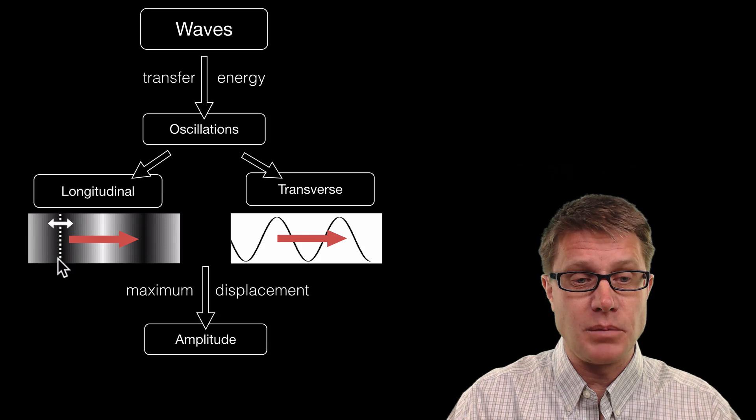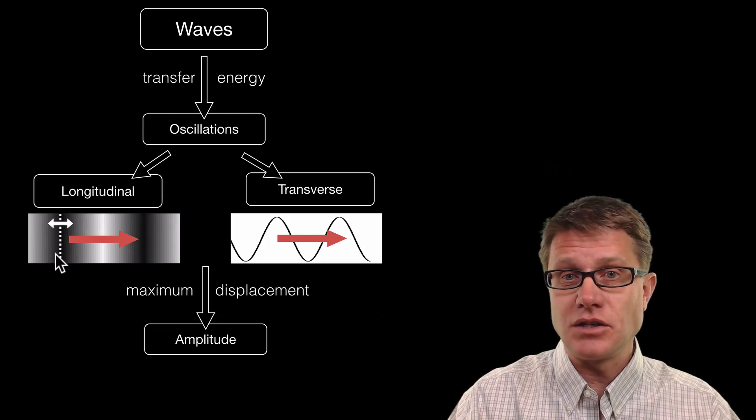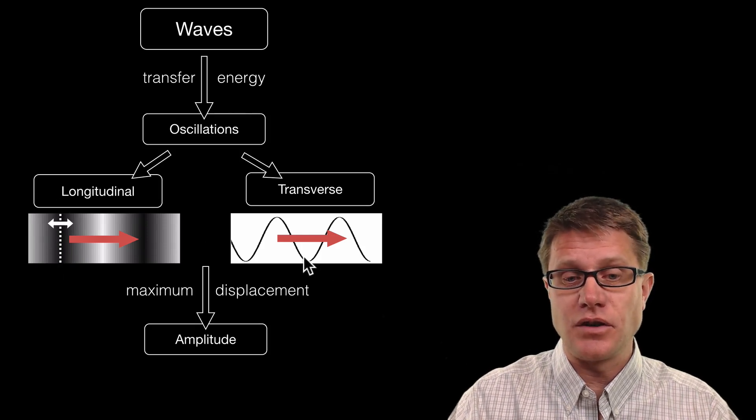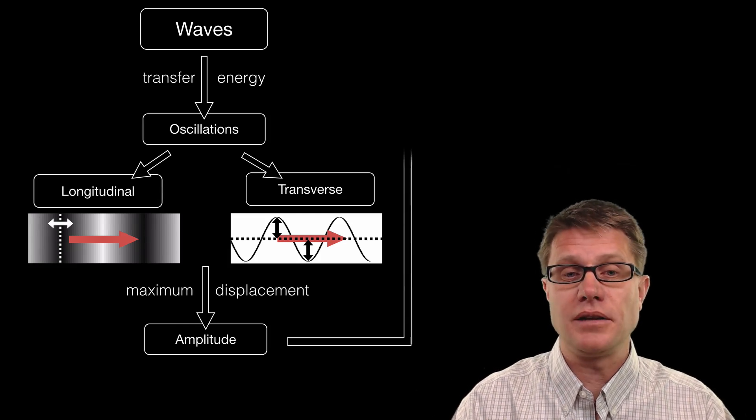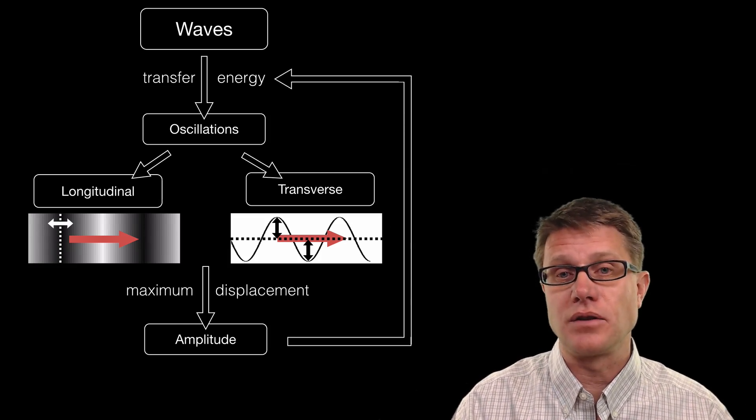In a longitudinal wave we could measure that using the density changes within the compressions. In a transverse wave it is easier. We just measure how high the crest is, how low the trough. But again it is directly related to the energy being transferred through the wave.